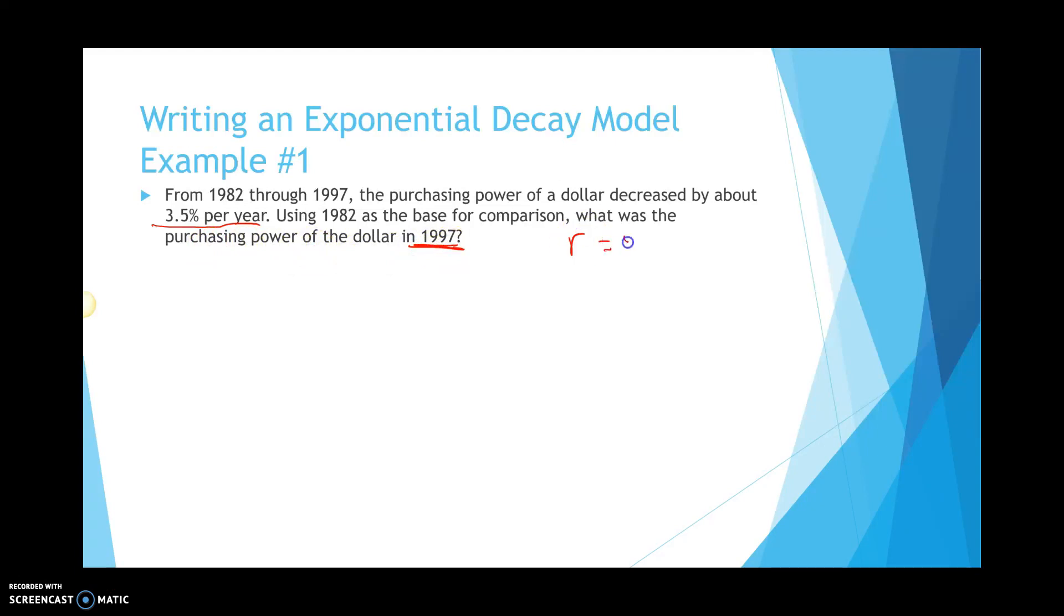Well, my r here is going to be the 3.5%. Again, we need to make that a decimal. So, we move that decimal two places to the left to get 0.035. And then, our t, my time. Well, if 1982 is my starting year, and we're going all the way to 1997, from 1982 to 1997, that's going to give me, that's 12 years. So, that's my time. Now, for my c, my starting rate, they didn't necessarily give us a starting rate. So, we'll just say our starting rate is 1.